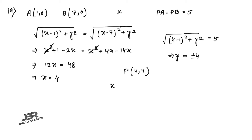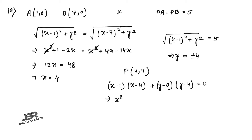The circle has diameter endpoints A = (1, 0) and P = (4, 4), so using the diameter form: (x−1)(x−4) + (y−0)(y−4) = 0, which expands to x² − 5x + 4 + y² − 4y = 0. That is your answer for sum 19.